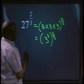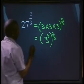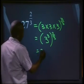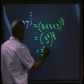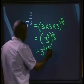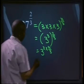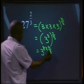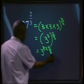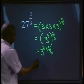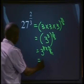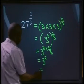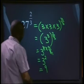Let's use one of our laws: raising a power to another power. That will be the same as 3 to the power of 3 times 2 over 3. 3 into 3 goes once, into 3 it goes once. So therefore, we have 3 to the power of 2, which will be equals to 9.